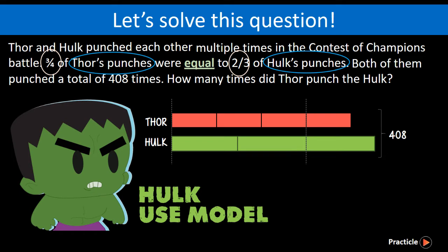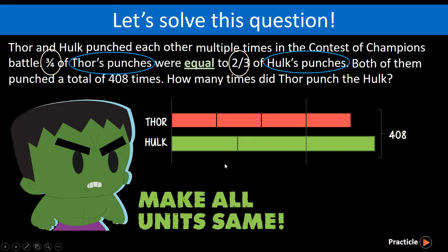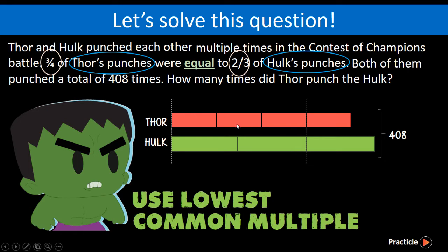Looking at this model, we realize something very weird. The 3 units here are supposed to be equal to the 2 units here, but they don't look the same. So what we need to do next is to make all the units the same. We can do that by using the lowest common multiple between 3 and 2. The lowest common multiple between 3 and 2 is 6.